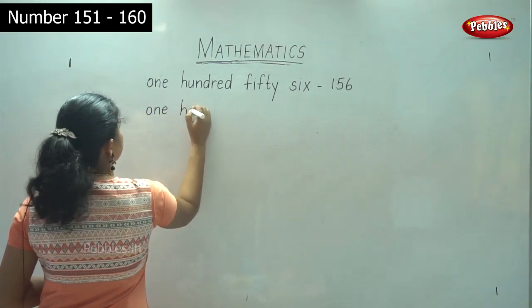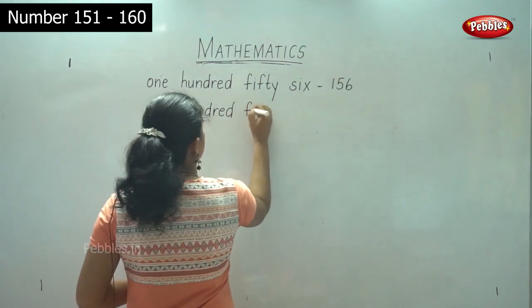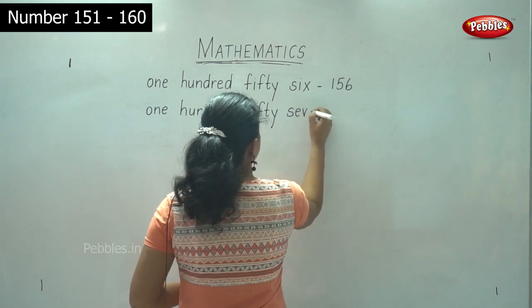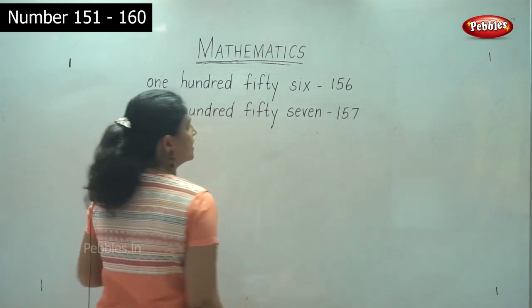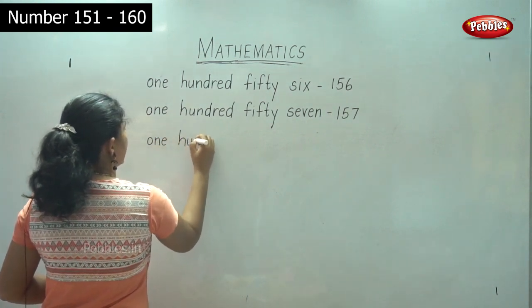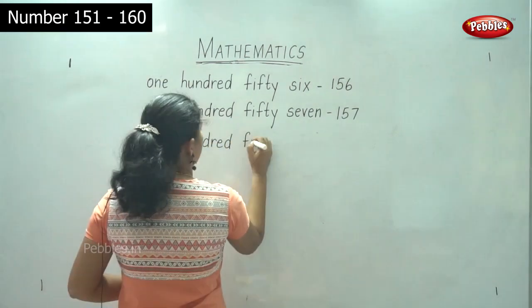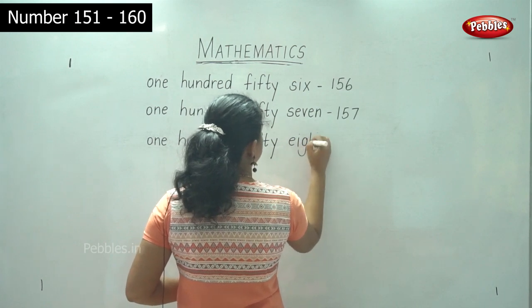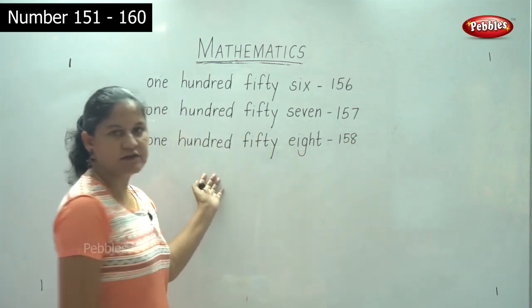157 is spelled O-N-E H-U-N-D-R-E-D F-I-F-T-Y S-E-V-E-N. 158 is spelled O-N-E H-U-N-D-R-E-D F-I-F-T-Y E-I-G-H-T — 158.